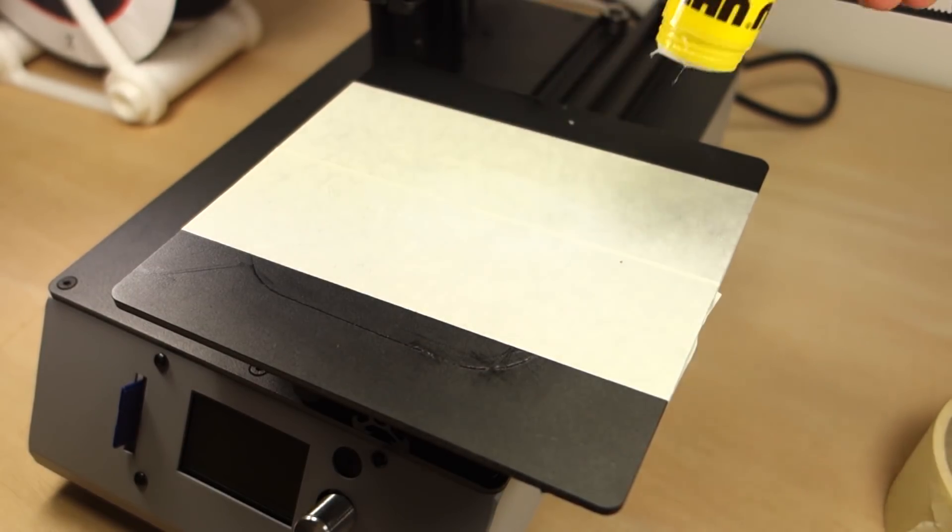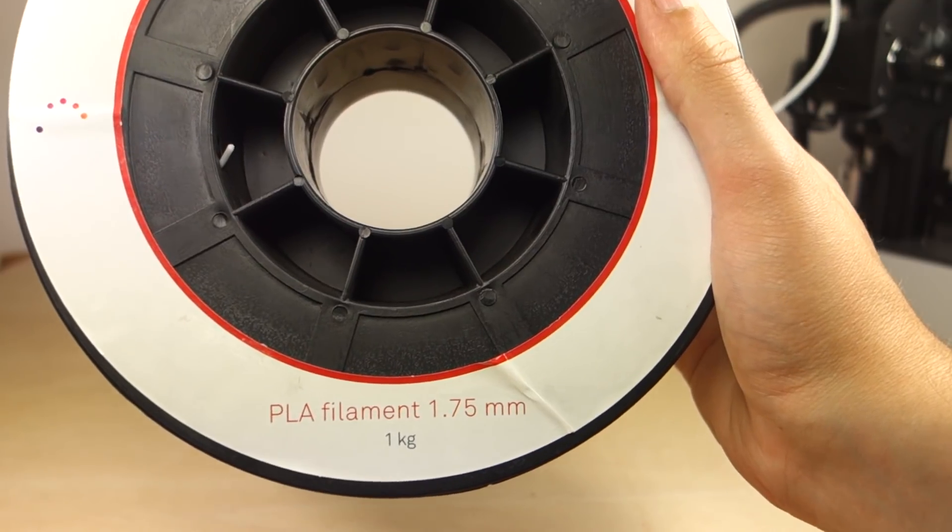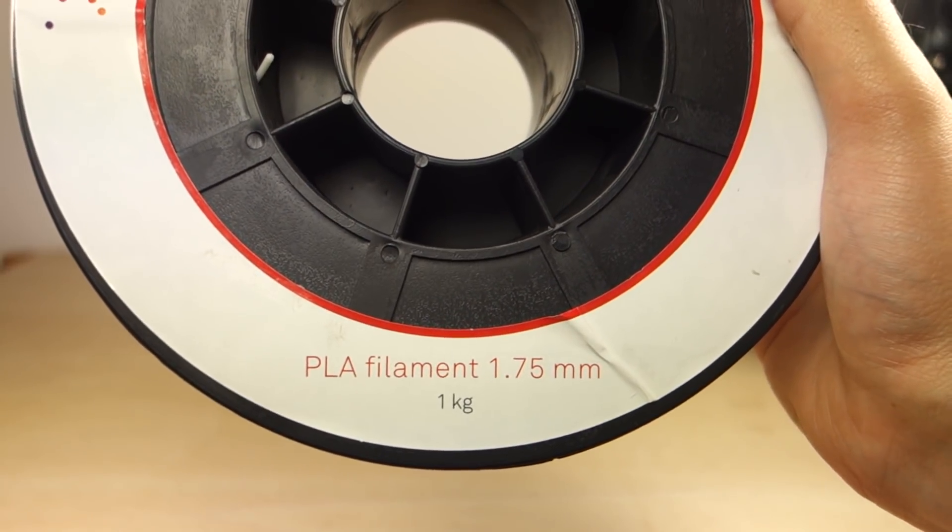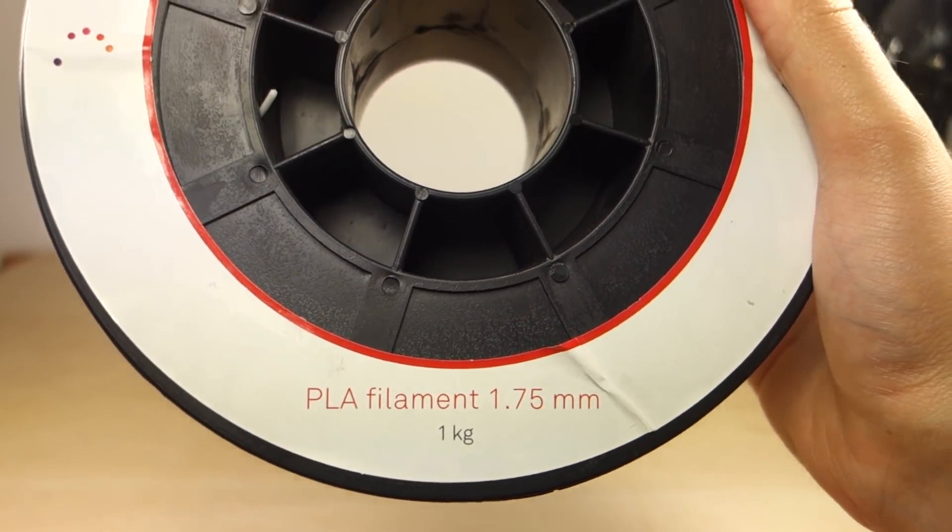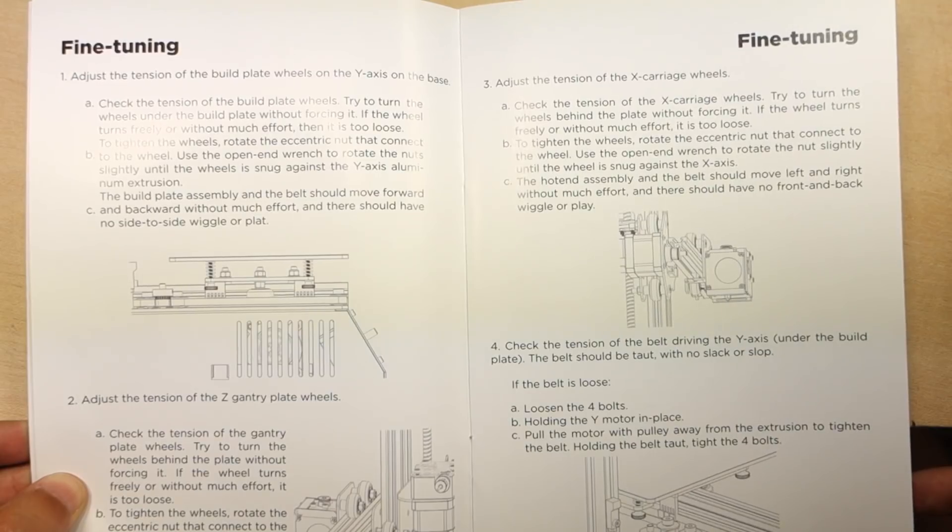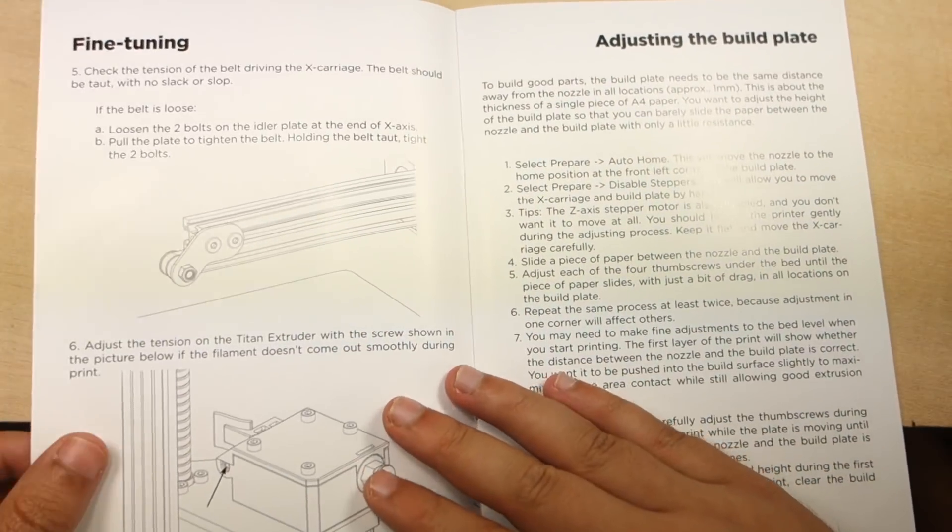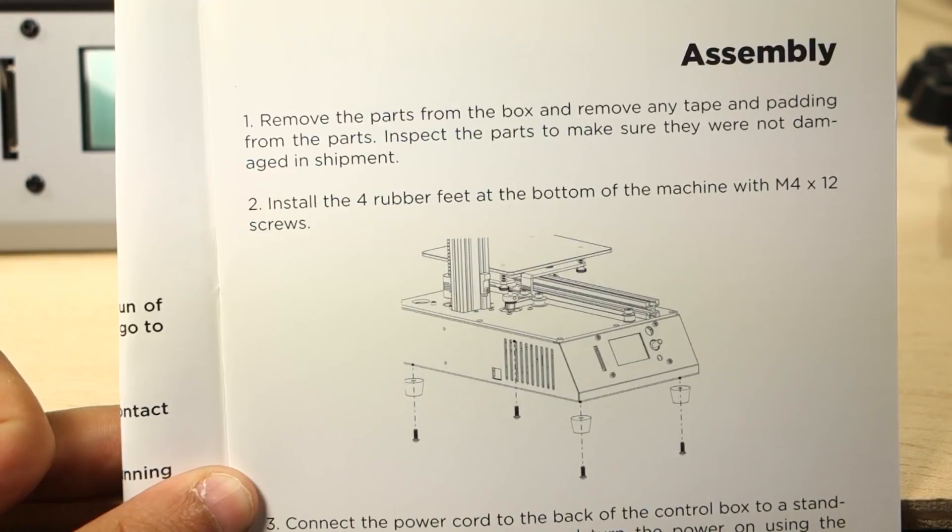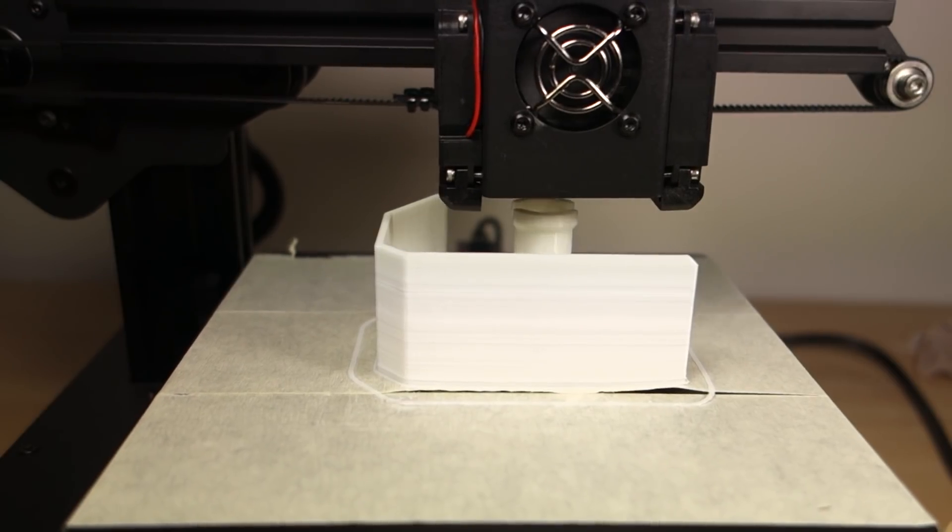Due to the lack of a heated bed, the recommended printing materials are only PLA and TPU filament. After getting the printer out of the box and following the fine tuning and the build plate adjusting instructions on the assembly manual, I've started printing some parts.